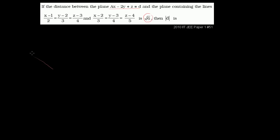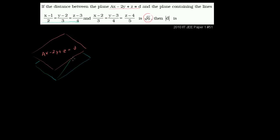So you have this plane up here with equation ax minus 2y plus z equal to d, and then another plane parallel to it that contains both of these lines. Maybe this line is on the blue plane in green, and this other line in magenta is also on the blue plane.